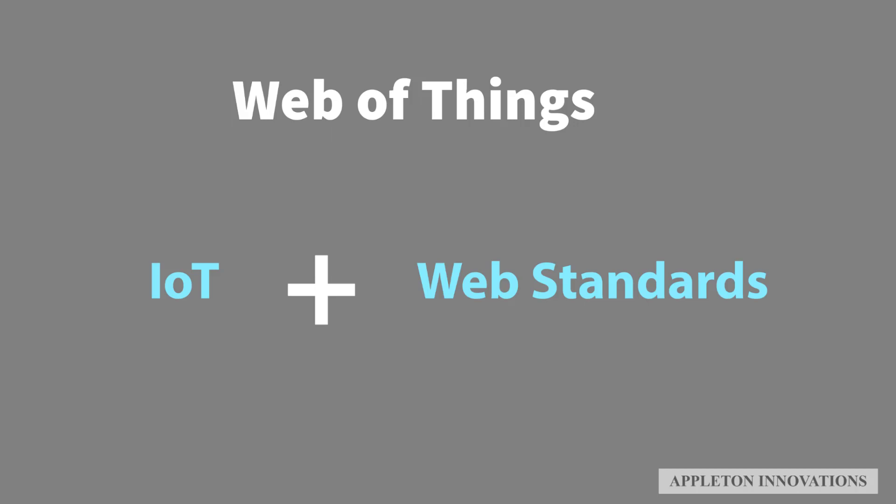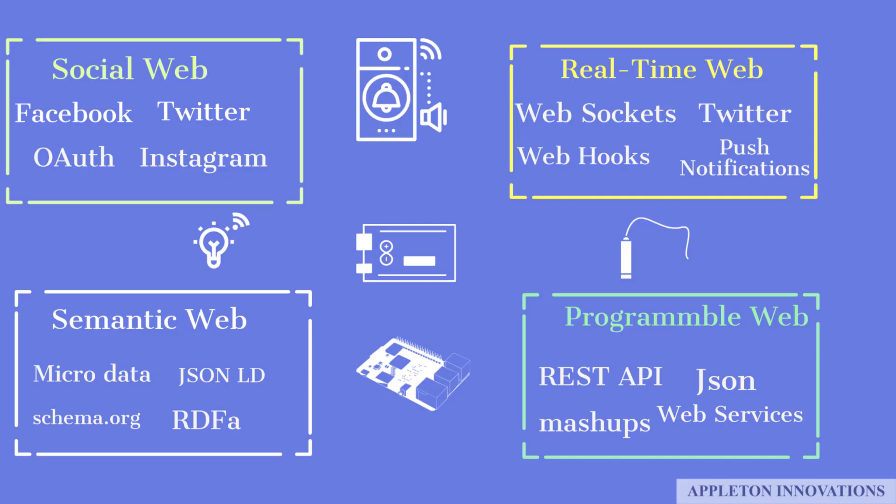Web of Things is a concept to integrate IoT devices into a single web application. It is a refinement of the Internet of Things by integrating IoT devices not only into the Internet but into the web architecture. Web of Things is an application-level protocol. The ultimate goal of Web of Things is using the tools and techniques used in the web for Internet of Things scenarios.